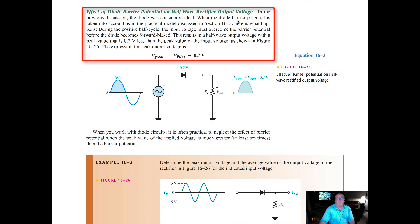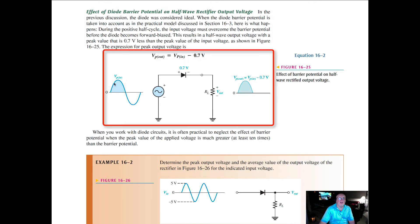In the previous discussion, the diode was considered ideal. When the diode barrier potential is taken into account, as is the practical model in Section 13.6, during the positive half cycle, the input voltage must overcome the barrier potential before the diode becomes forward biased. The diode does not start conducting until this sinusoid comes up and reaches the seven-tenths of a volt mark.